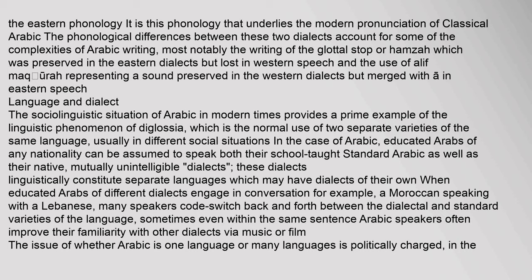The Eastern phonology underlies the modern pronunciation of Classical Arabic. The phonological differences between the Eastern and Western dialects account for some complexities of Arabic writing, most notably the writing of the glottal stop or Hamza — preserved in the Eastern dialects but lost in Western speech — and the use of Aleph-Maksura, representing a sound preserved in the Western dialects but merged with 'a' in Eastern speech. The sociolinguistic situation of Arabic in modern times provides a prime example of diglossia, which is the normal use of two separate varieties of the same language, usually in different social situations.